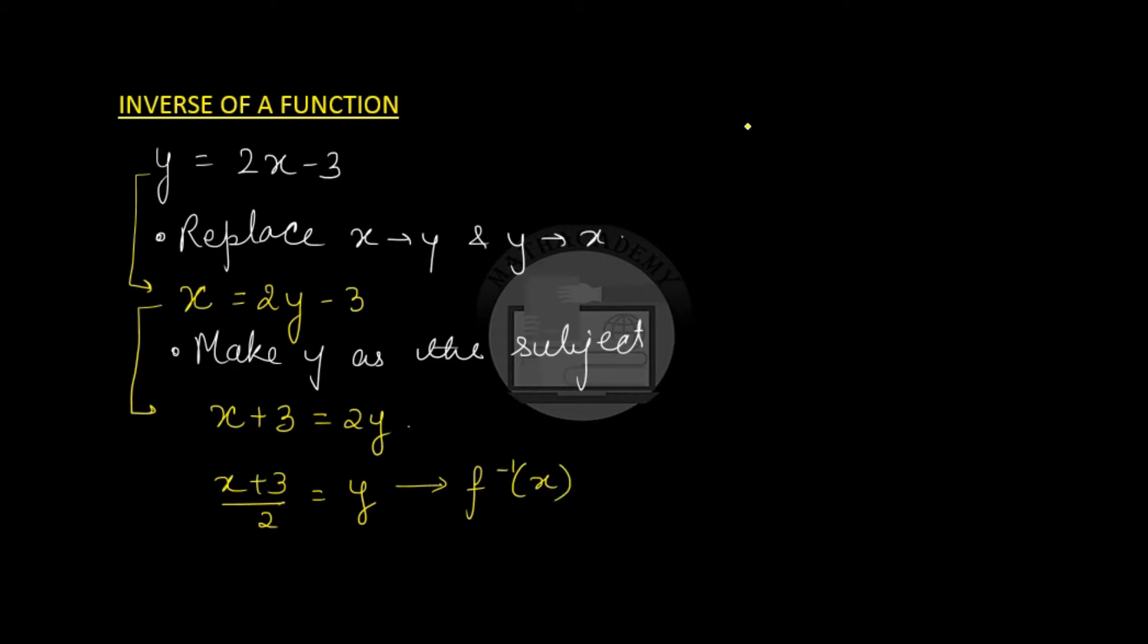So we say that if our f(x) is equal to 2x minus 3, f inverse of x is equal to (x + 3) over 2. This is f inverse of x and this is f of x.